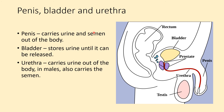Penis, bladder and urethra. The penis carries urine and semen out of the body — it's the part inserted into the vagina during sexual intercourse. The bladder, same as in females, stores urine until it can be released. The urethra carries urine out through the penis. In males, the urethra is part of the reproductive system because it also carries semen containing sperm — that's different to females, where the urethra has no reproductive function and just carries urine.